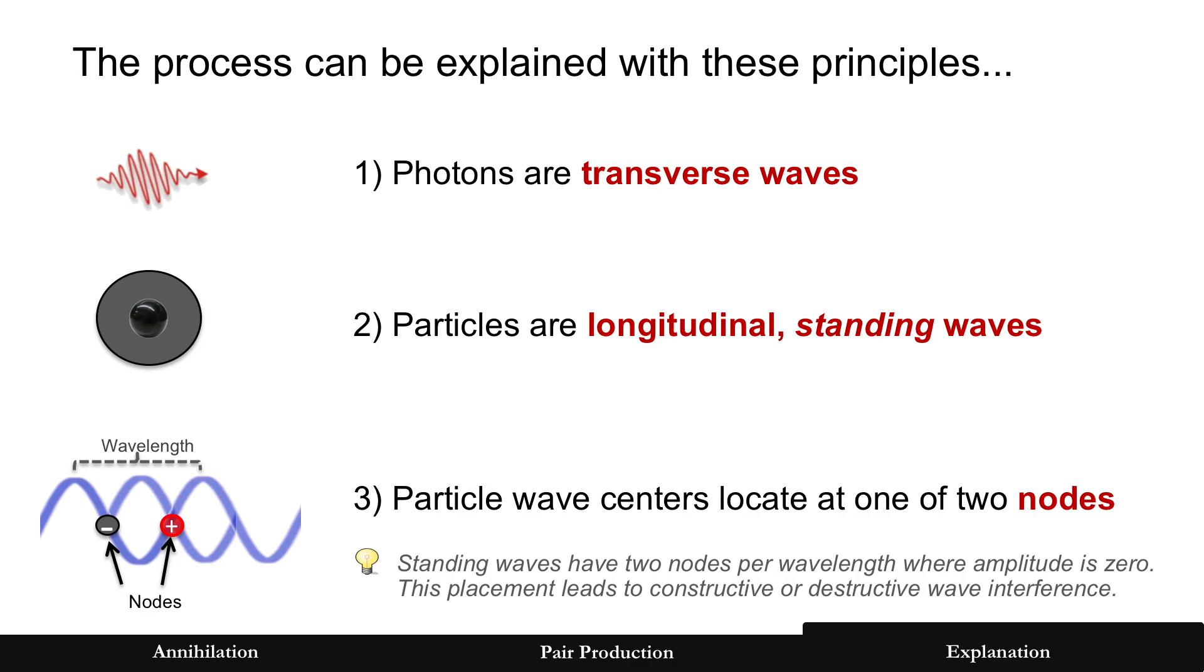Third, is that that particle core, called the wave center, can really only be stable at one of two nodes in a standing wave. And there are two nodes, and they're separated at half wavelengths. And a standing wave only has two nodes per wavelength. Now that will lead to constructive or destructive wave interference because of the placement of those wave centers.